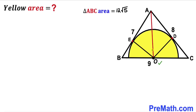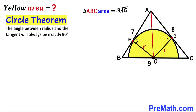I now connect center O with the points of tangency D and E. OD and OE are both radii of the semicircle, which I'll label as lowercase r. By the circle theorem, the angle between a radius and a tangent line is always 90 degrees, so these angles in our diagram are each 90 degrees.